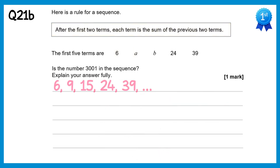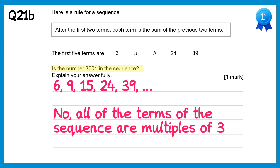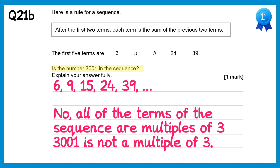We need to decide if 3001 is in the sequence. Notice all the terms (6, 9, 15, 24, 39) are multiples of 3. Since adding two multiples of 3 always gives a multiple of 3, every term in the sequence is a multiple of 3. But 3001 is not a multiple of 3 (3000 is, but adding 1 makes it not), so 3001 is not in the sequence.